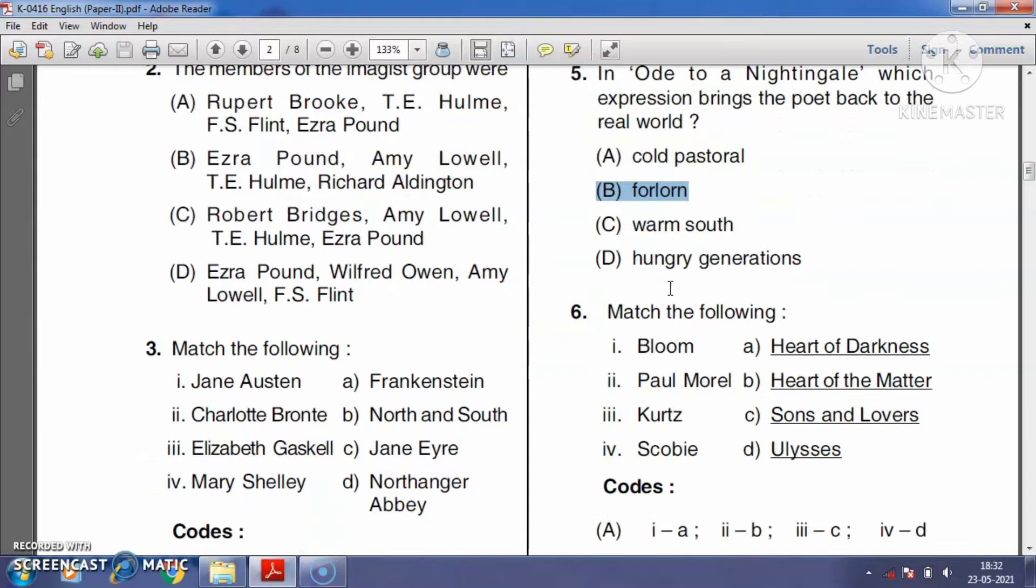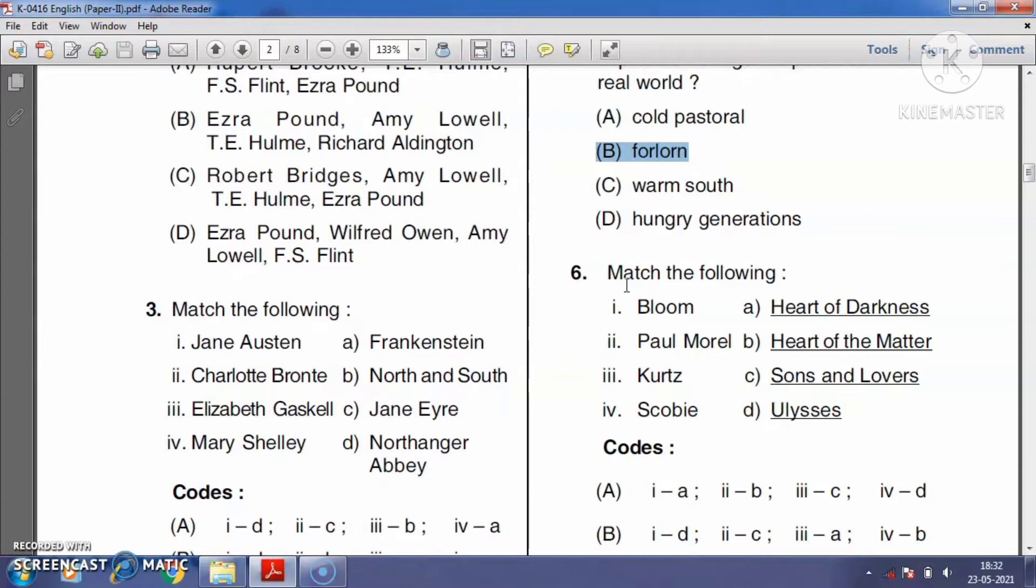Question number six: Match the following. Leopold Bloom is a fictional character in the novel Ulysses by James Joyce. Paul Morel is a character of D.H. Lawrence's novel Sons and Lovers. Kurtz is a central character in Joseph Conrad's novel Heart of Darkness. Scobie is a character in Graham Greene's novel The Heart of the Matter. So the right answer is option B.